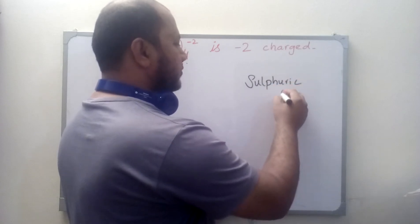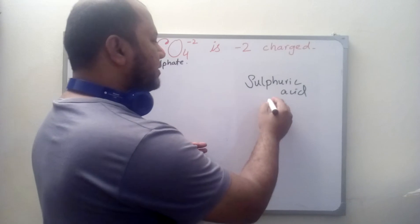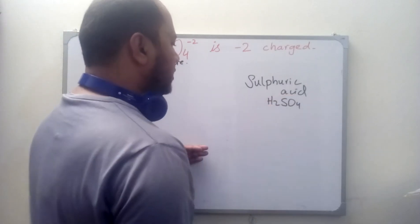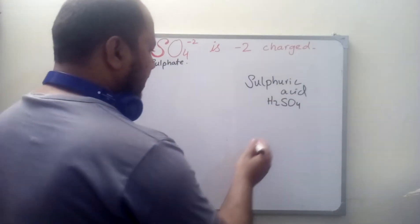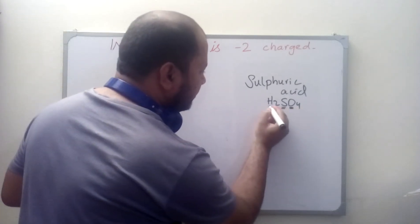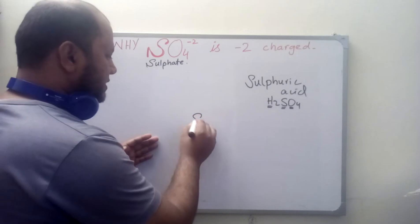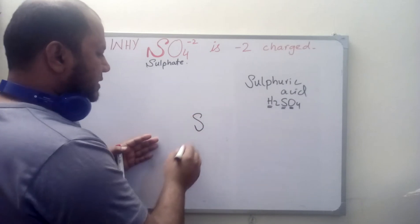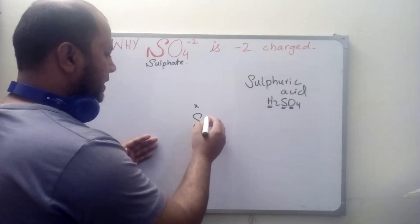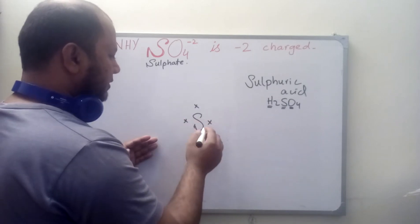This compound is H₂SO4. If we think about sulfuric acid, its central atom is sulfur, which contains some oxygen and some hydrogen. Sulfur basically contains six electrons in its valence shell.